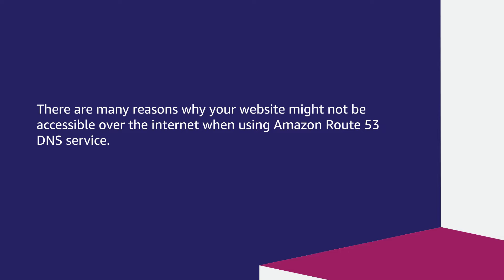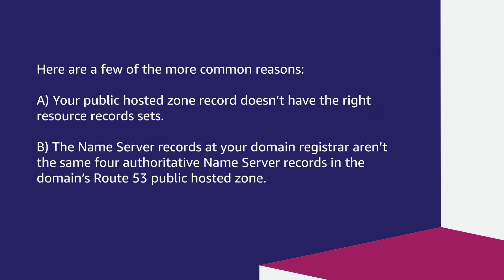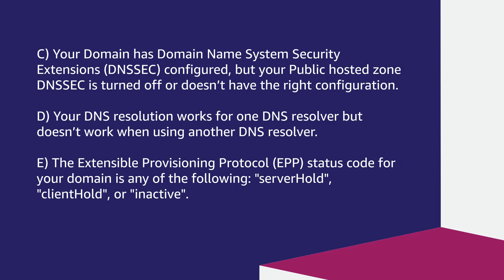There are many reasons why your website might not be accessible over the internet when using Amazon Route 53 DNS service. Here are a few of the more common reasons: your public hosted zone record doesn't have the right resource record sets; the nameserver records at your domain registrar aren't the same as the authoritative nameserver records in the Route 53 public hosted zone; your domain has DNSSEC configured but your public hosted zone DNSSEC is turned off or doesn't have the right configuration; your DNS resolution works for one DNS resolver but doesn't work when using another; or the EPP status code for your domain is serverHold, clientHold, or inactive. Let's talk about each of these in more detail.